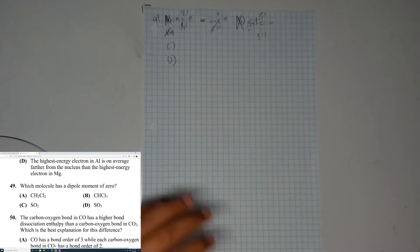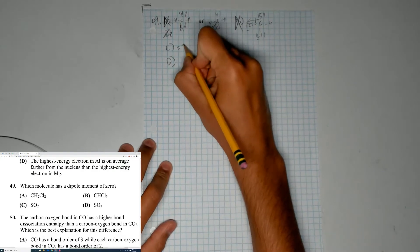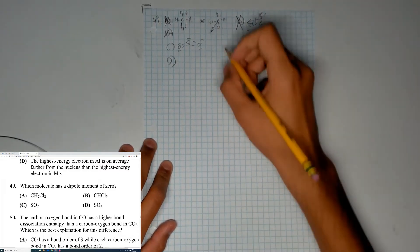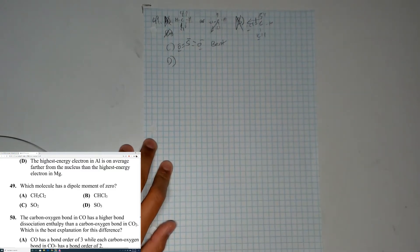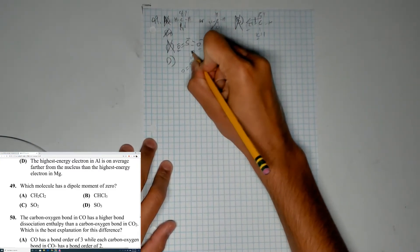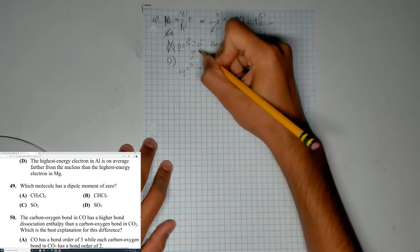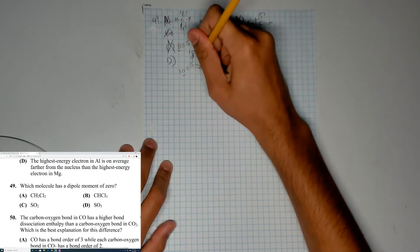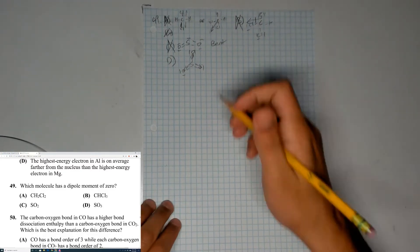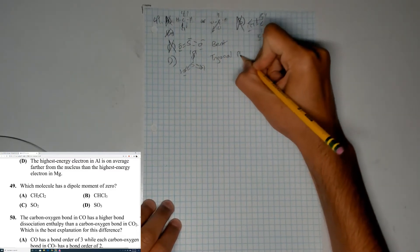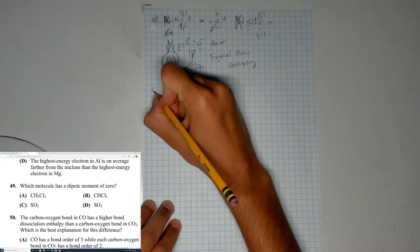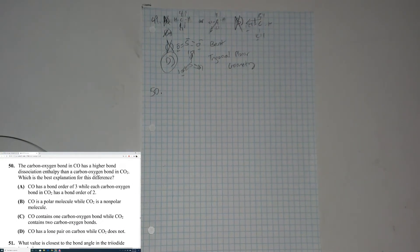Moving on to SO2 — if we draw the Lewis structure of SO2, the molecular geometry is bent, which means the dipole moment is not zero, so C is wrong. And if you draw SO3, it's trigonal planar — there is equal vector strength on each side, meaning there is no net dipole moment. So the answer is D. Pretty straightforward question.